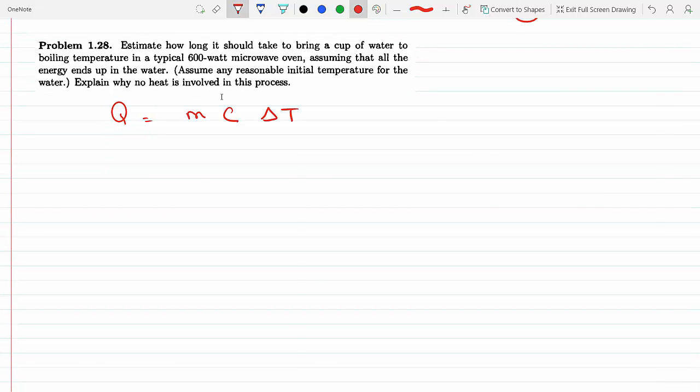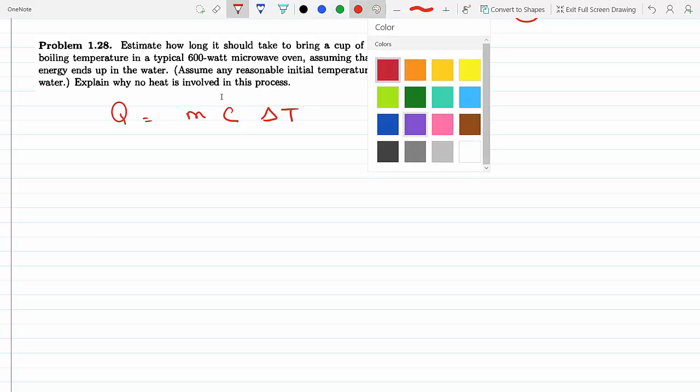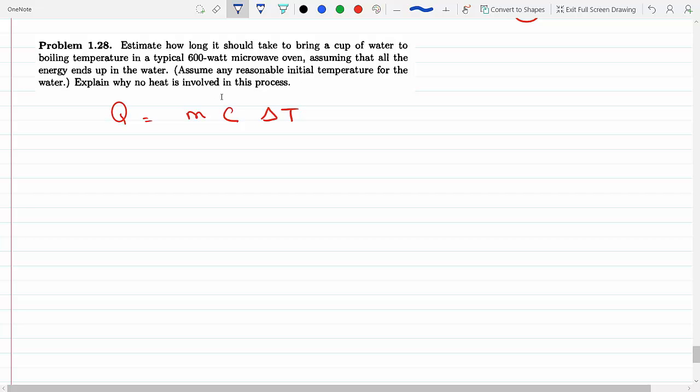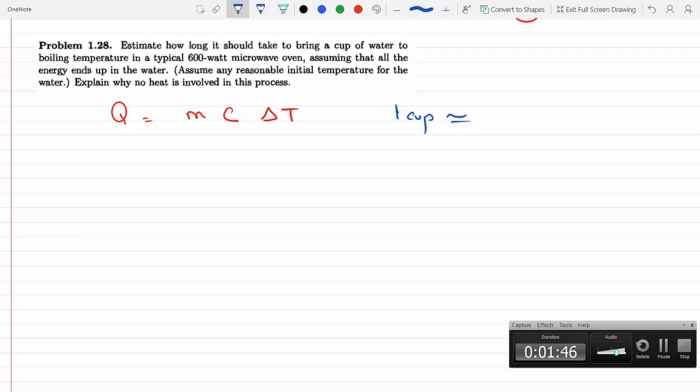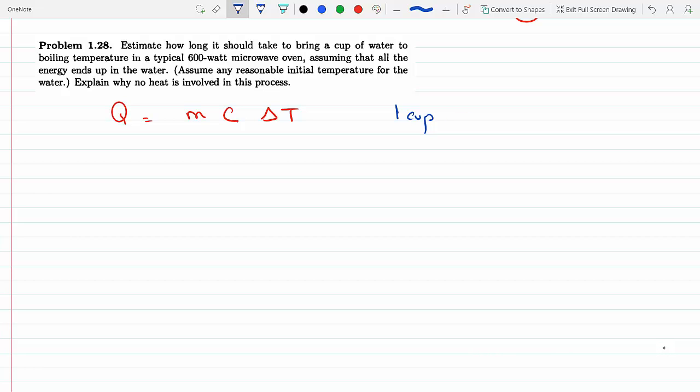If we assume that we have a cup, we can change one cup to kilograms easily, or you could just look this up and find the direct conversion. Let me see how much it is in kilograms. So every cup is 0.236 liters, and we know that water has a density of one gram per milliliter. So why don't we just make this milliliters—it'd be easier. So this is times 236.6 milliliters, and this is one gram per milliliter.